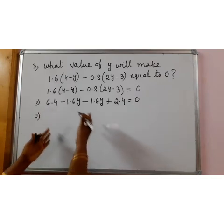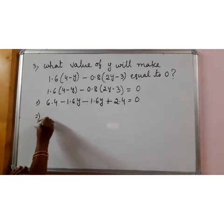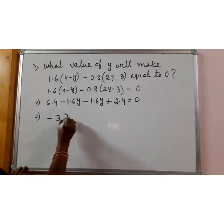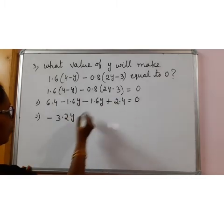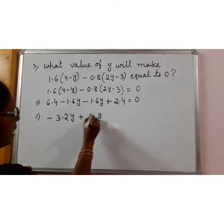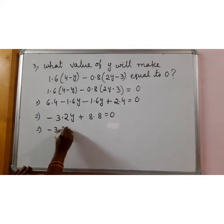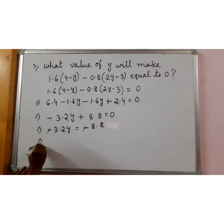So y's and numbers are there. Minus 1.6y minus 1.6y, both are minus, we have to write minus, 1.6 plus 1.6 is 3.2, but after 1 plus there is a decimal. 6.4 plus 2.4, 4 plus 4, 8, 6 plus 2 is 8, is equal to 0. That implies minus 3.2y equal to minus 8.8. Minus minus cancel. So 3.2y is equal to 8.8.